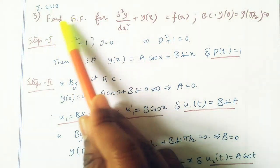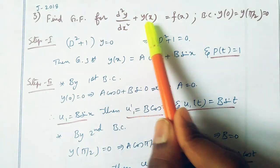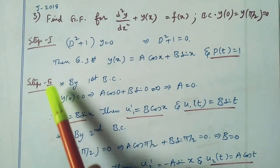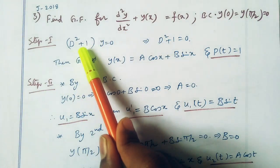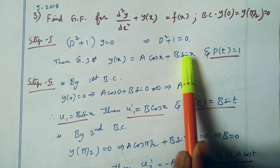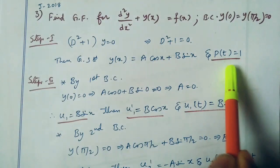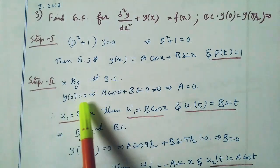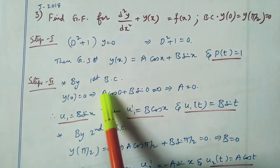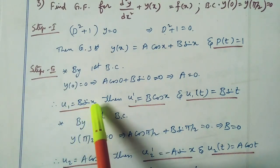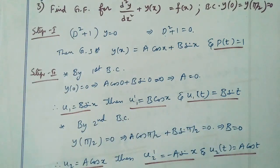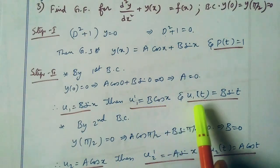This problem is from June 2018. Find the Green's function for d²y/dx² plus y(x) equal to f(x), with boundary conditions y(0) equal to y(π/2) equal to 0. Step 1: the homogeneous equation d²y/dx² plus 1 equal to 0. The general solution is y(x) equal to a·cos x plus b·sin x, and the coefficient of the second derivative term is 1. Step 2: applying the first boundary condition y(0) equal to 0 gives a·cos 0 plus b·sin 0 equal to 0, so a equal to 0. Therefore u1 equal to b·sin x, u1 dash equal to b·cos x, and u1(t) equal to b·sin t.